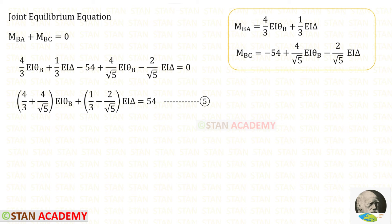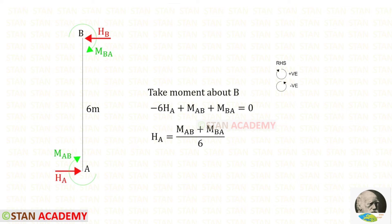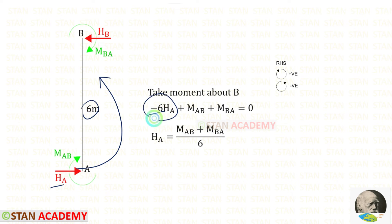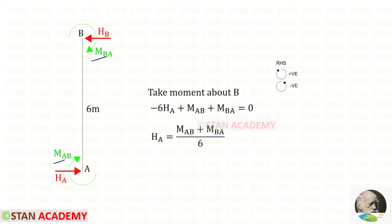We need one more equation. Let us take member AB and find an expression for horizontal reaction H_A. In this process, we assume moments M_AB and M_BA are acting clockwise. Taking moments about B and noting H_A acts anticlockwise, we get minus 6 H_A. Both moments are clockwise and therefore positive. Finally, H_A equals (M_AB + M_BA) upon 6.